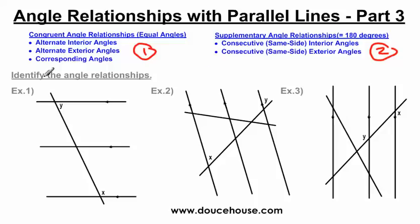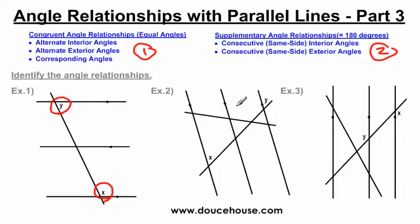This first example says identify the angle relationships between angle y and angle x. This problem is trickier than the examples in my first two videos because I have three parallel lines instead of two. Here I have three parallel lines and two transversals.